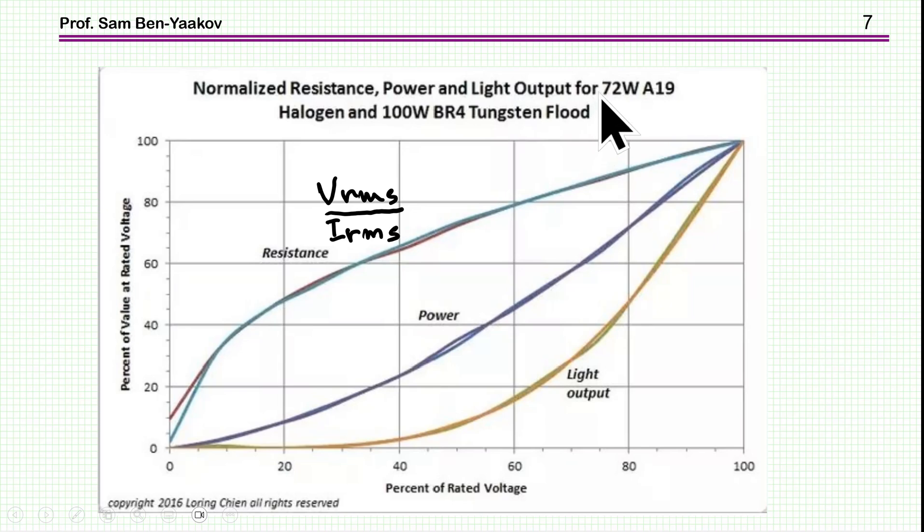This is a halogen lamp, and this is a regular tungsten lamp. Now, these two lamps are actually filament lamps, but they are built in a different way, such that the halogen can go to much higher temperature without deteriorating the filament. So basically these are filament lamps.